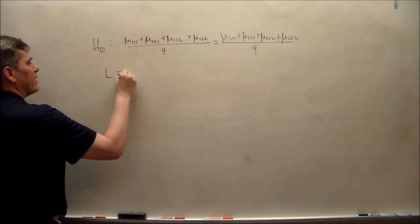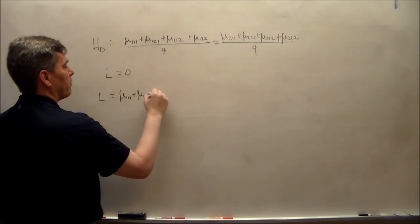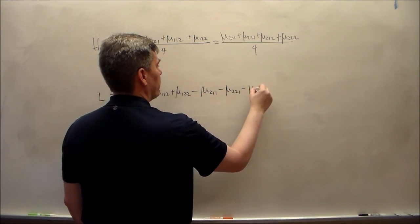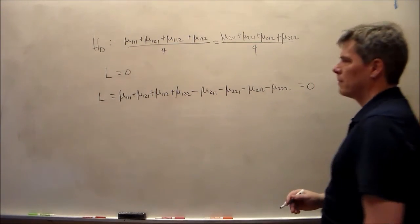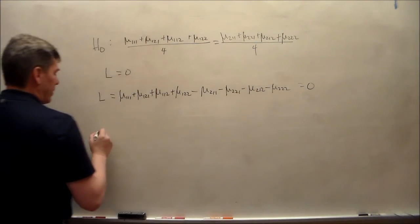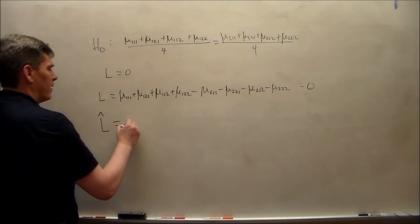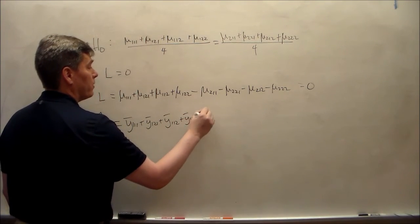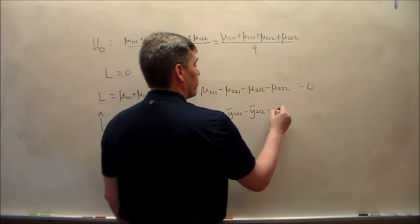Remember, we're going to change this into the form of L equals 0. So in this case, L is equal to multiply both sides by 4, move everything to the left. Mu 1, 1, 1, plus mu 1, 2, 1, plus mu 1, 1, 2, plus mu 1, 2, 2, minus mu 2, 1, 1, minus mu 2, 2, 1, minus mu 2, 1, 2, minus mu 2, 2, 2. That's going to be our L. We're going to hypothesize that that is equal to 0.